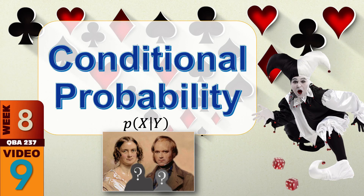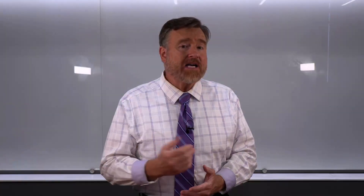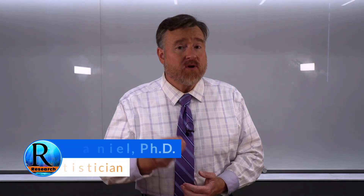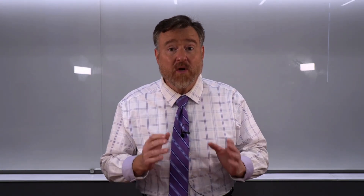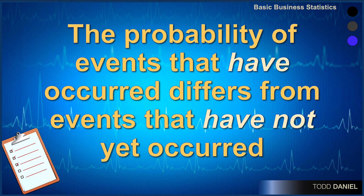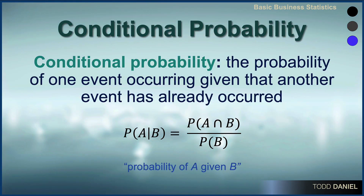Previously, as we discussed relationships of probability, I explained that an event occurring can change the probability of another event occurring. And now we're going to look at conditional probability, which is the idea that the probability of events that have occurred differs from events that have not yet occurred. Conditional probability is the probability of one event occurring given that another event has already occurred.